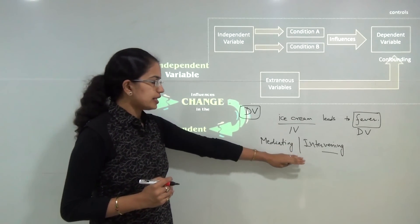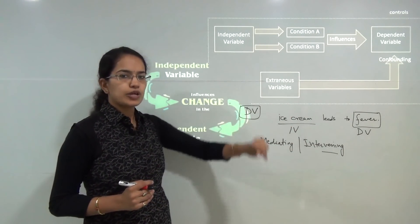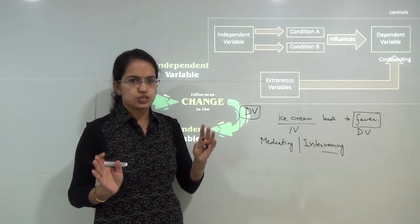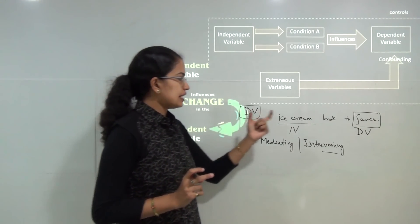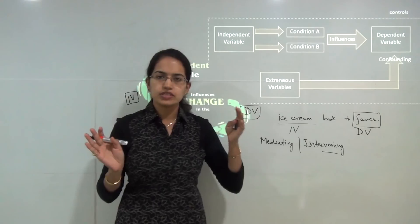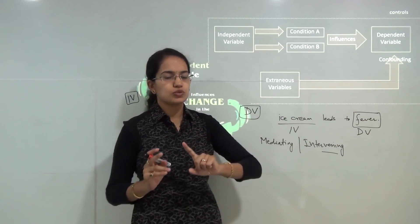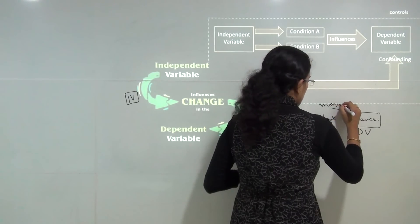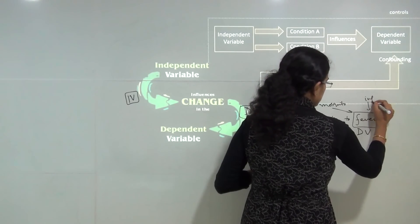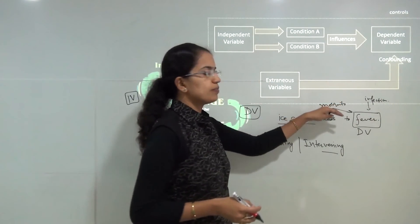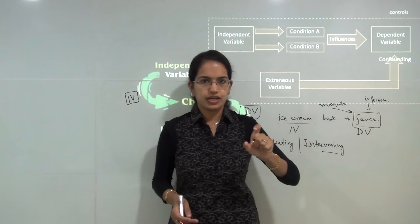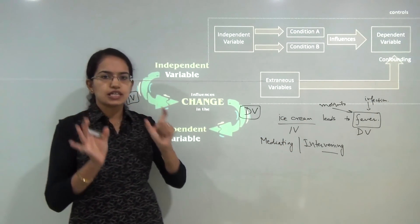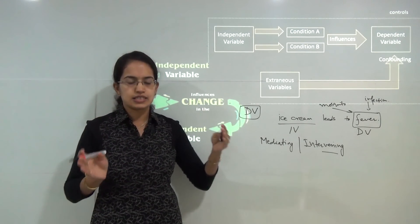Another important variable is the confounding variable. Confounding variable is anything extra besides the given situation. I say eating ice cream leads to fever — these are something which are known — but this fever could be caused due to some other reasons, such as a mosquito bite or another infection. So a mosquito bite or infection becomes the confounding variable: an extra variable that interferes with the existing activity.